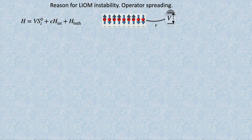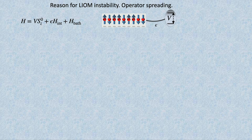We added a probe spin—the same construction works for a probe photon making it a Floquet problem, or a probe oscillator. We weakly couple them. What we want to ask is: if the magnetic field, which I call V, is very large—how exactly does this almost conserved operator...